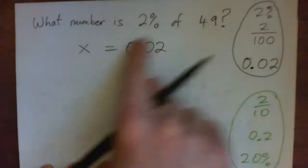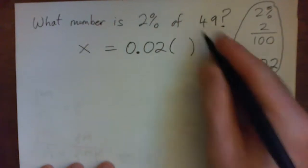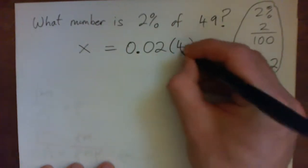So anyway, 2% is 0.02. Of is multiply. Multiply by what? 49.